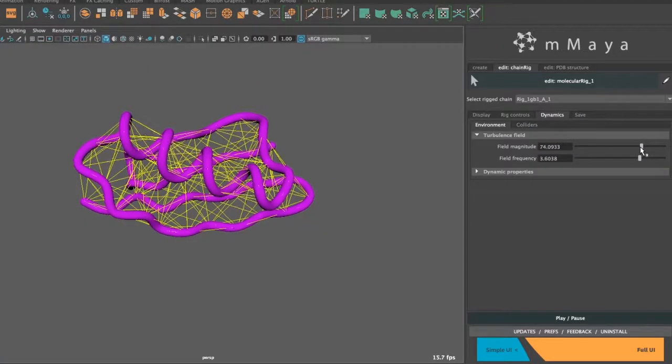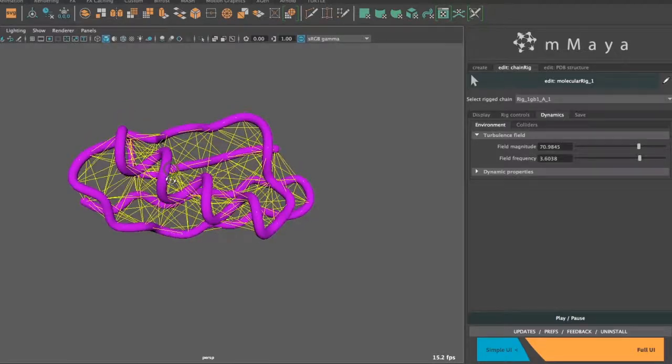Elastic networks allow you to control and maintain the secondary structure of your protein.